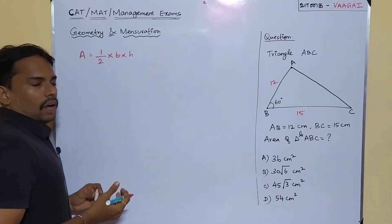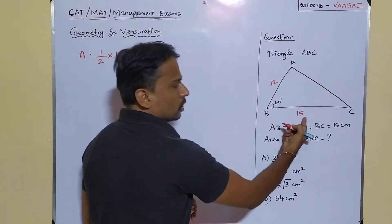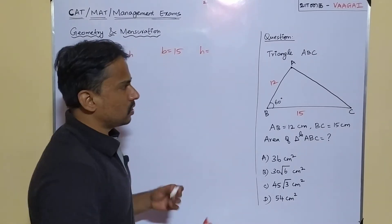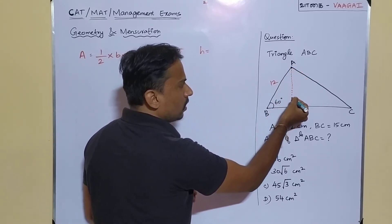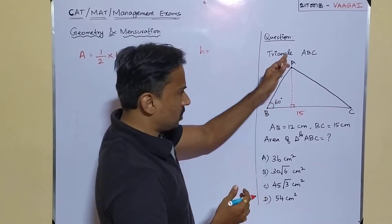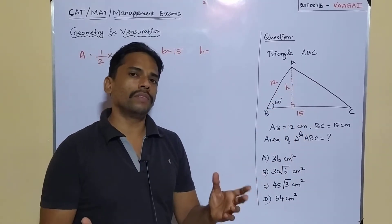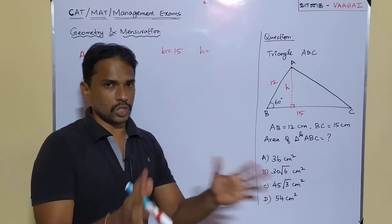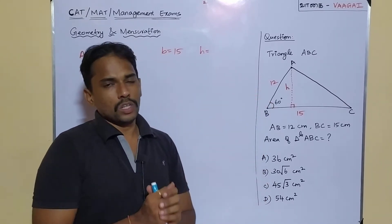We are already available with the base — it is side BC, which is 15 centimeters. But what about the height? From vertex A we have to drop a line perpendicular to the base BC. I have represented this through a dotted line. This measure is what we call the height of the triangle, and as of now we do not have it — we have to calculate it.